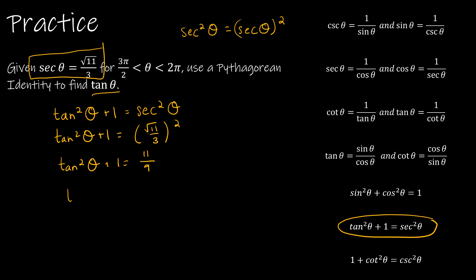I'm going to subtract 1 from each side. And if I subtract 1, that's the same as subtracting 9 ninths, because 9 ninths is equal to 1. So that gives me 2 ninths. And then if I take the square root of each side to find tangent of theta, tangent of theta is either plus or minus radical 2 over 3.